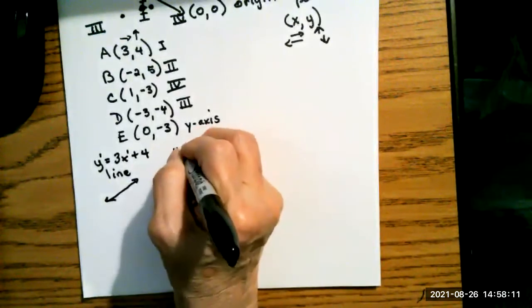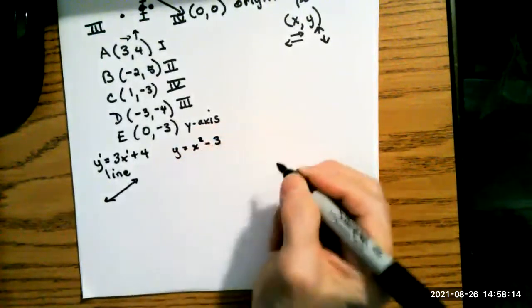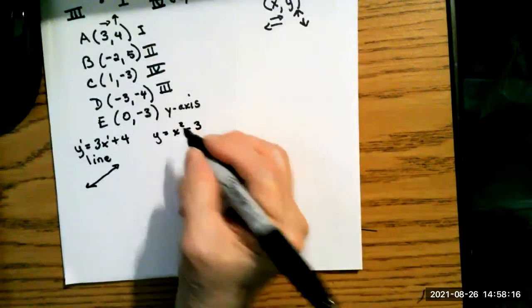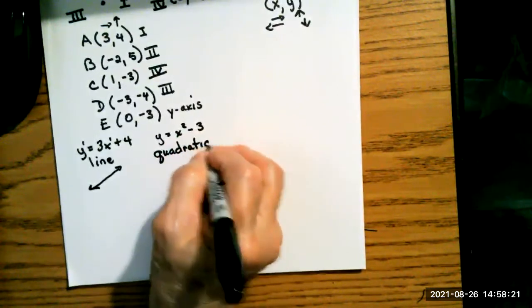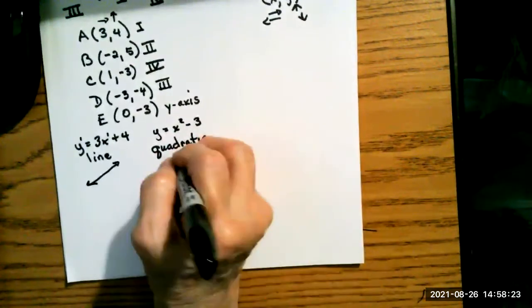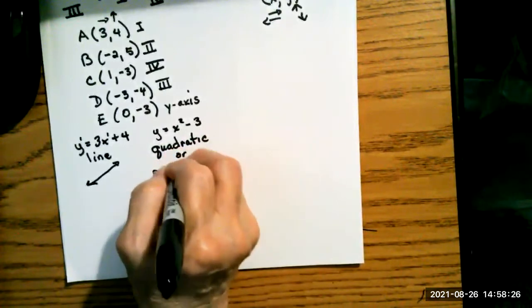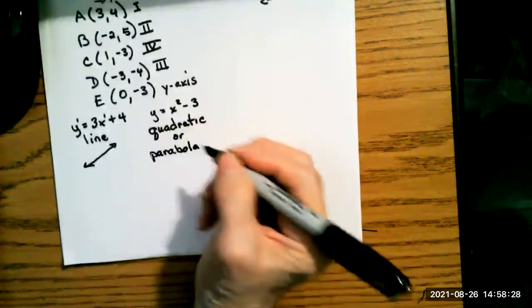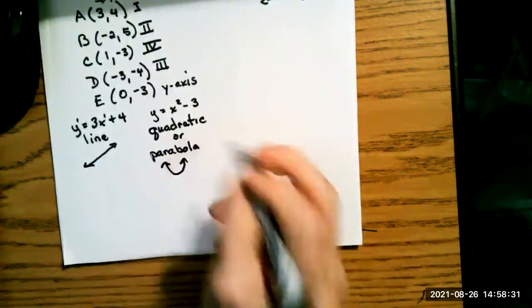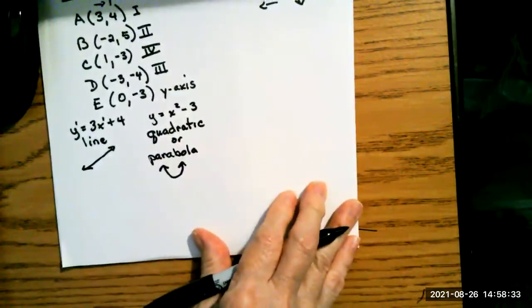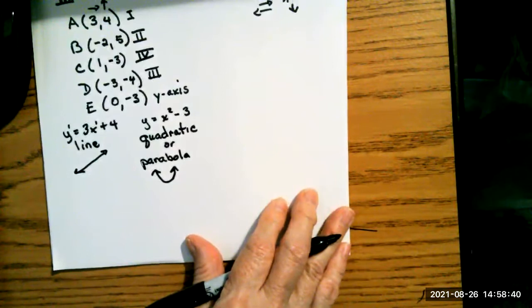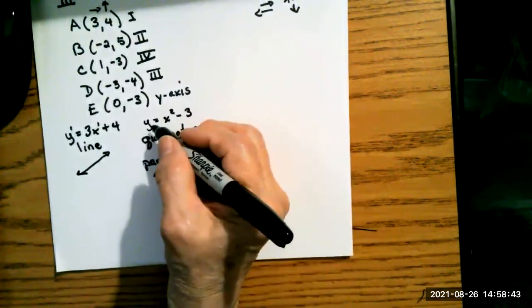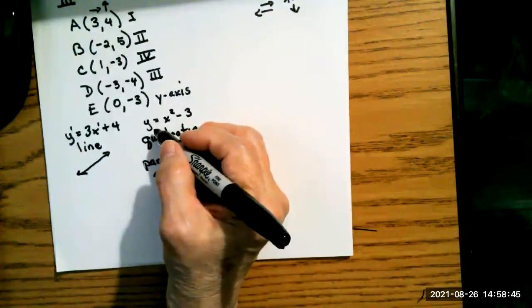Let's do this one. y equals x squared minus 3. It is squared here, so we call that one a quadratic. The exponent is two, and sometimes we call them parabolas, and the parabolas will make a little U shape. Let's just call them smiley faces or frowny faces. This one is a smiley face.